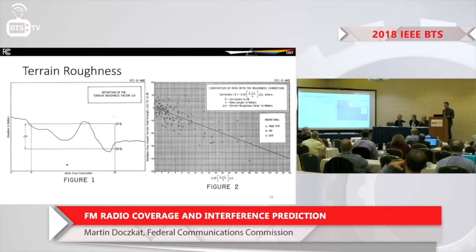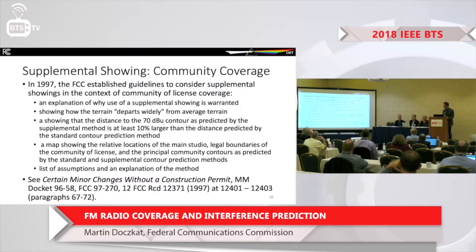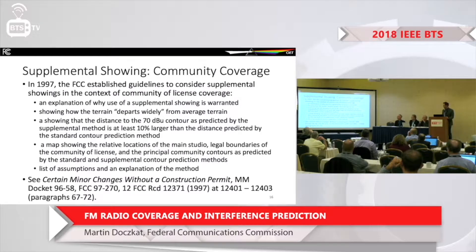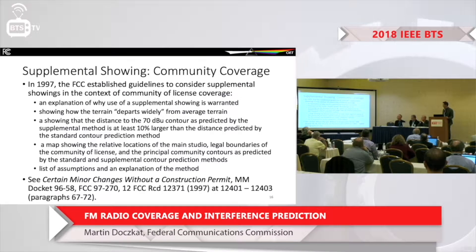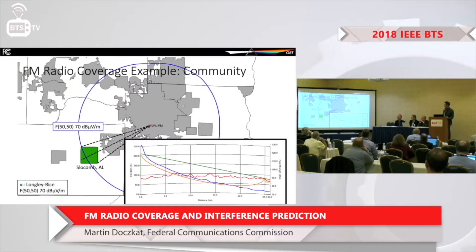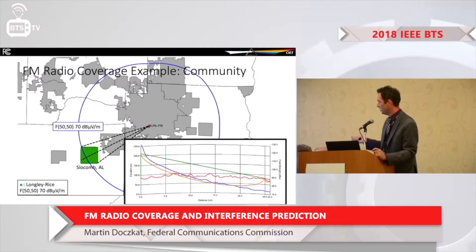What happens if your propagation paths aren't typical? The FCC rules address terrain roughness — if your path is not typical, terrain roughness factors can be applied in certain situations. In 1997, the Media Bureau released guidance about alternative showings for community coverage license showings: if your terrain departs widely from the average — worse than 10 or 20 meters, or greater than 100 meters versus the typical 50 meters — you're allowed to use an alternative method and show a map of where your transmitter is relative to the community of license. For example, the 70 dBµV/m community coverage contour using Longley-Rice covers the whole community, while the standard contour may not.